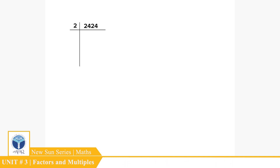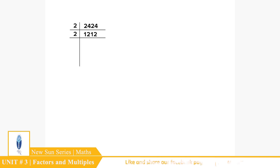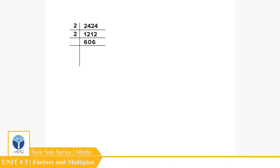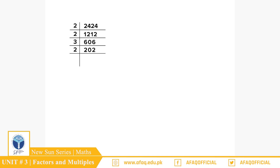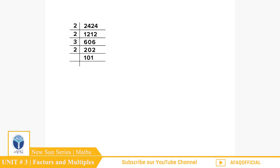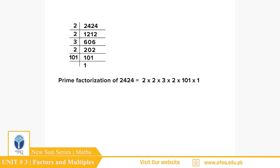2424 کو 2 پر divide کریں تو 1212 آیا، پھر 2 پر divide کریں تو 606 آیا، پھر 2 پر divide کریں تو 202 آیا، 202 کو 2 پر divide کریں تو 101 آیا۔ So 2424 = 2 × 2 × 2 × 3 × 101 × 1. اب 142 کے factors معلوم کریں۔